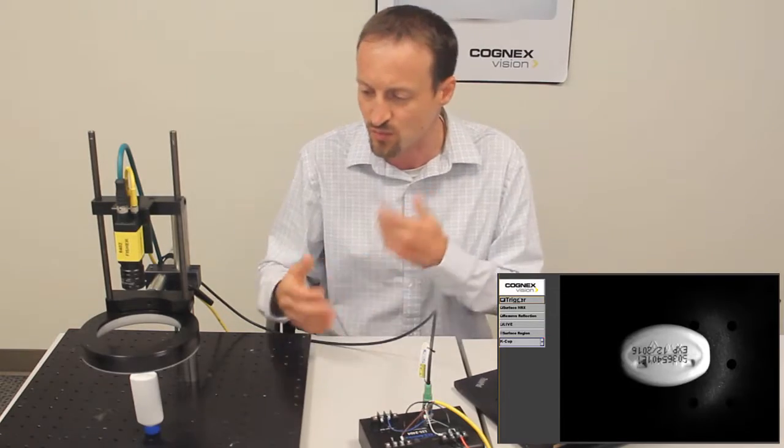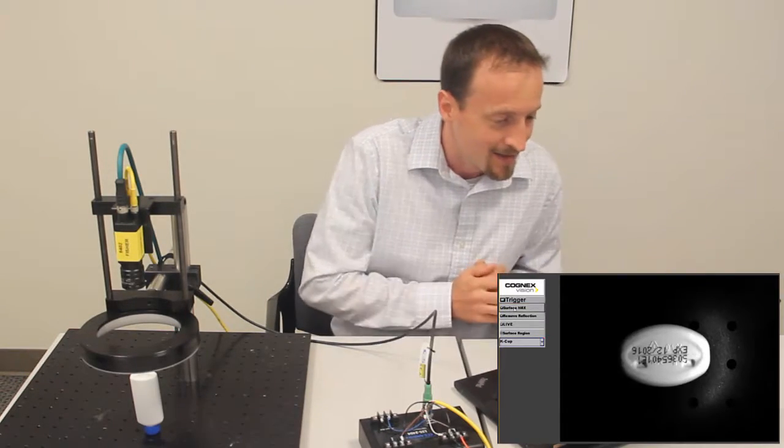The camera then takes those four images, runs some math on them, and generates an output image that looks like this.